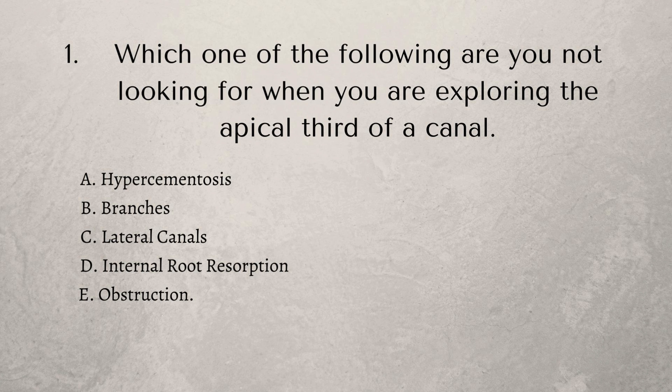The options are hypercementosis, branches, lateral canals, internal root resorption, or obstruction. You would definitely be looking for branches, lateral canals, internal root resorption, and obstruction. Hypercementosis is the odd one out because it happens on the root surface, so we're not looking for it when exploring the apical third of a canal.